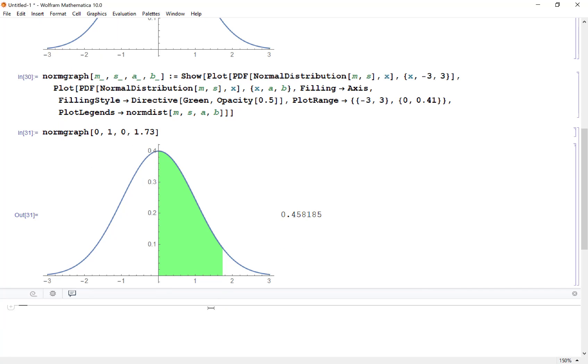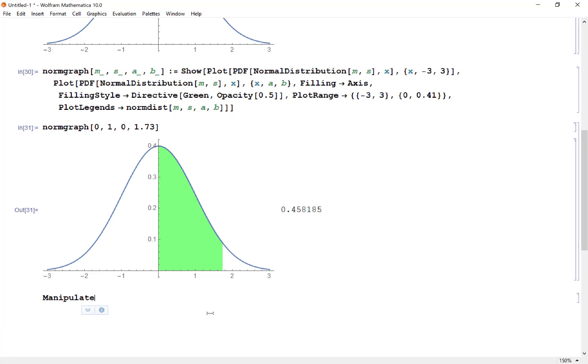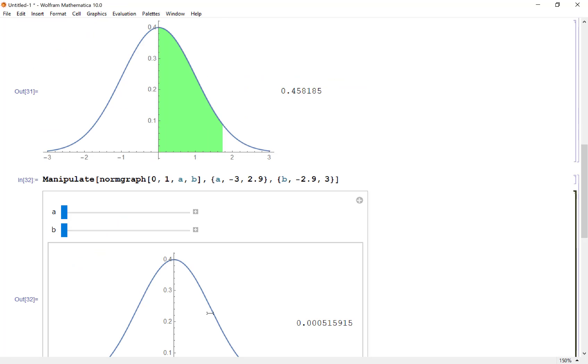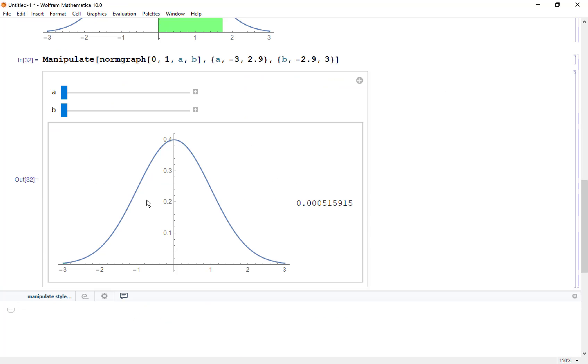All right, now what's really cool is if I take that normgraph and I put a manipulator around it. If I want to stay a standard normal curve I'll just say 0 to 1, a to b and then I can vary my starting point and end point. Let's start with a going from negative 3 up to 2.9 and b goes from negative 2.9 up to 3. When I do that I get this output and as I drag b across you can see the shaded region filling up the normal curve with the probabilities trending up to 100 percent and if I want between two values I can just drag my a up as well.